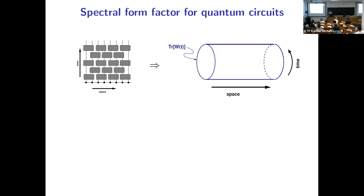Now, taking it as accepted that the spectral form factor is a good diagnostic for the transition, I want to talk about calculating it. In the space-time picture of quantum circuits, the spectral form factor is the modulus squared of the trace of the evolution operator over T time steps. Taking the trace, we wrap the circuit on a cylinder in the time direction. The spectral form factor, being the modulus squared of the trace, requires two of these cylinders — one drawn in blue and one in green.